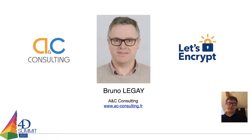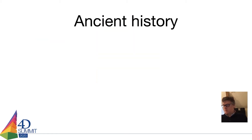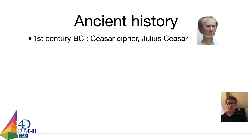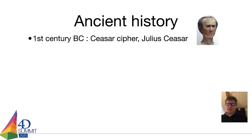We will finish with a few tips to check the security of your website configuration. I've got 70 slides so let's get started. Confidentiality has always been a problem. As soon as we started to write, we wanted to protect our communication. Julius Caesar was using a famous cipher called the Caesar cipher, which consists of shifting the alphabet — the A becomes a C, the B becomes a D, and so on.